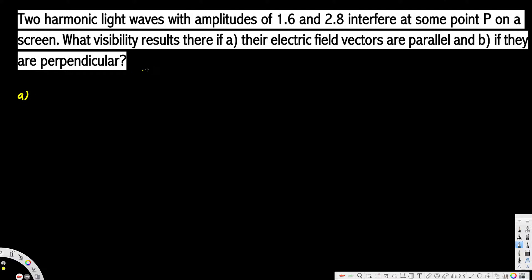Before we do that, we have to calculate the intensity, which can be calculated using I = A². In our case, I1 = 1.6² = 2.56, and I2 = 2.8² = 7.84.